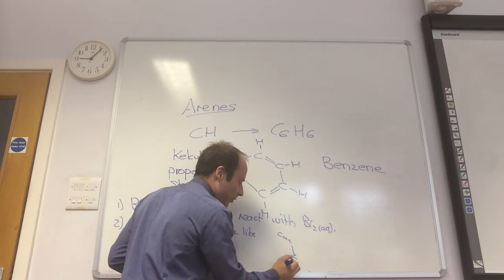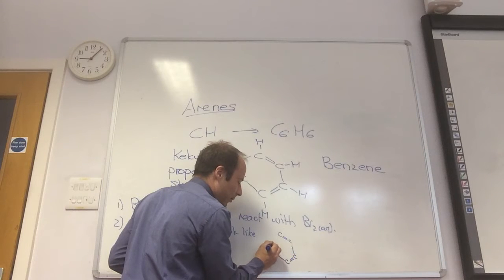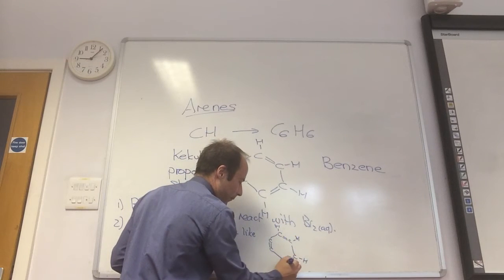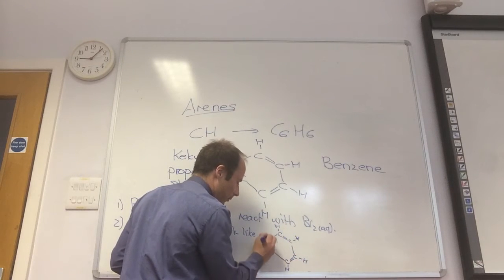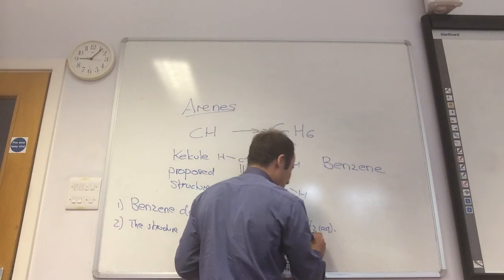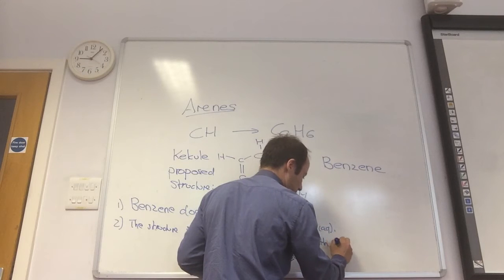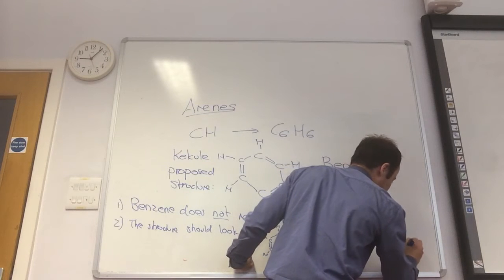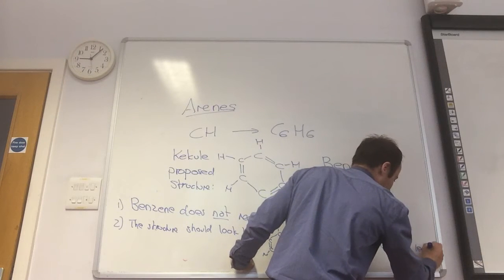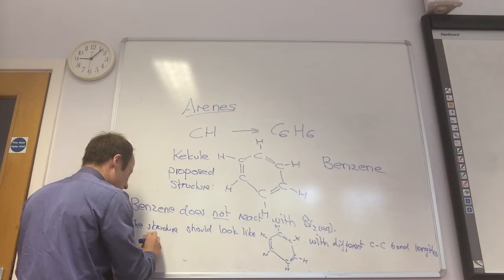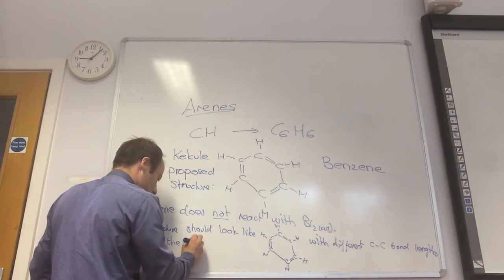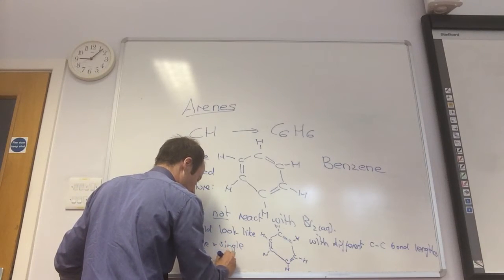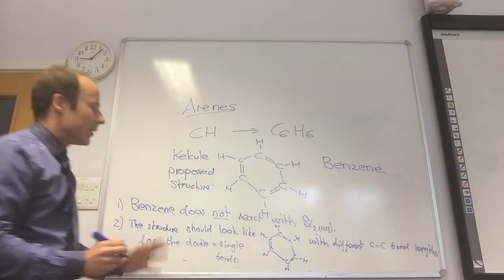So the structure should look like, and if we draw it out, I'd have a carbon with a very short double bond, and then a long single bond, and then a short double bond, and then a long single bond, short double bond, long single bond, little hydrogens coming off. So it should look like that with different carbon-carbon bondings.